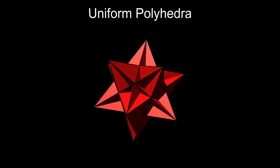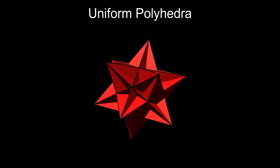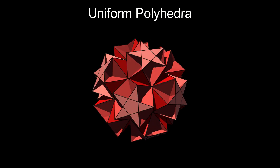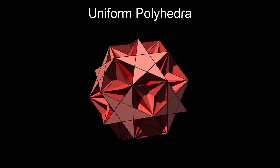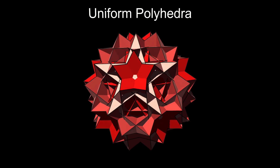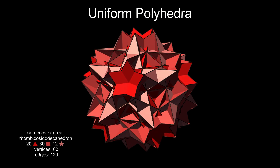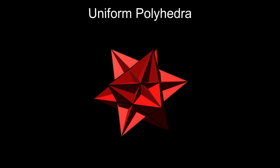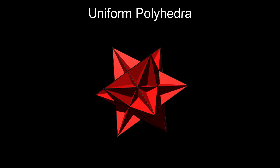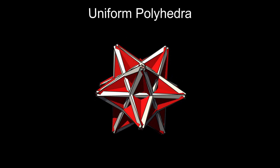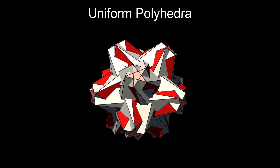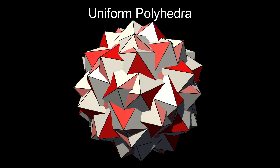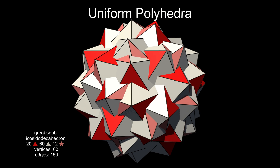The great icosahedron can be expanded, but you have to move the faces inwards through the centre and out the other side to produce this beautiful shape, the non-convex great rhombicosidodecahedron. A snub can also be created by expanding and twisting. This great snub icosahedrodecahedron is probably the simplest of all the concave snubs.